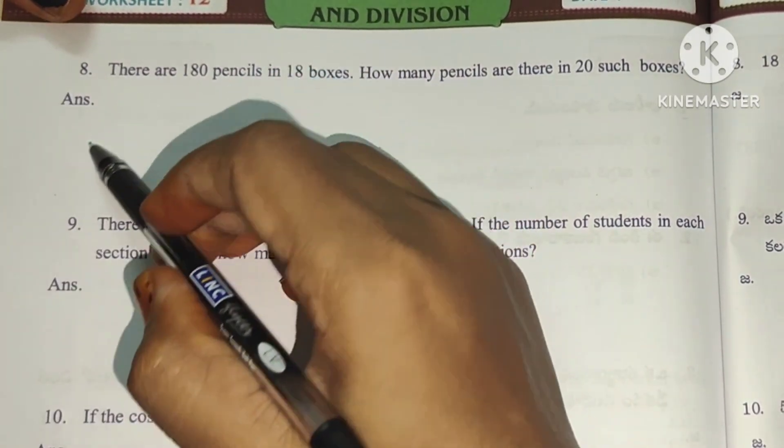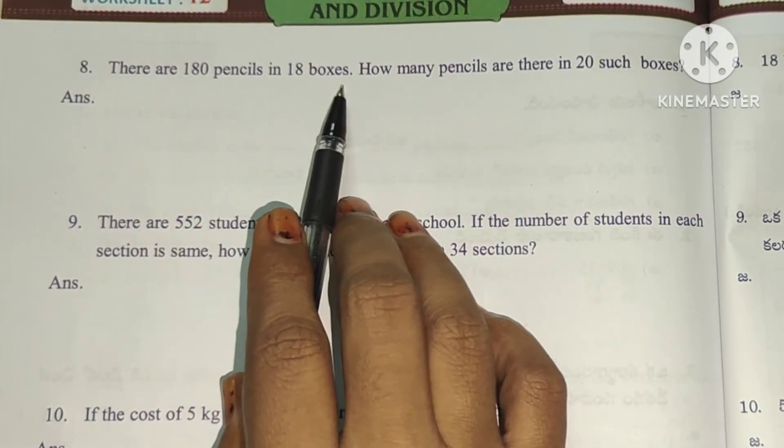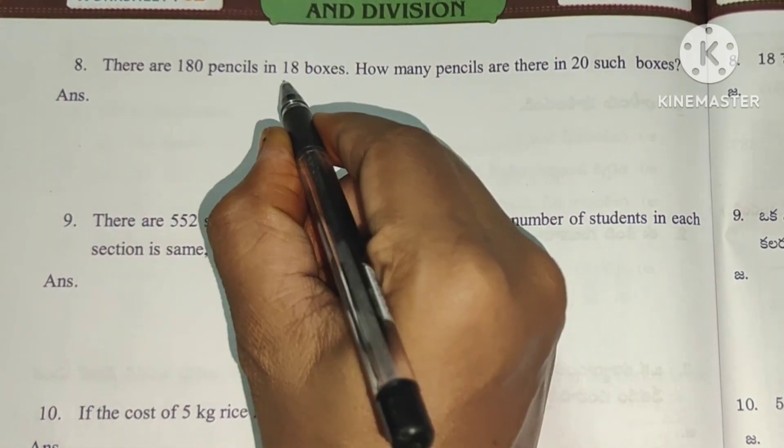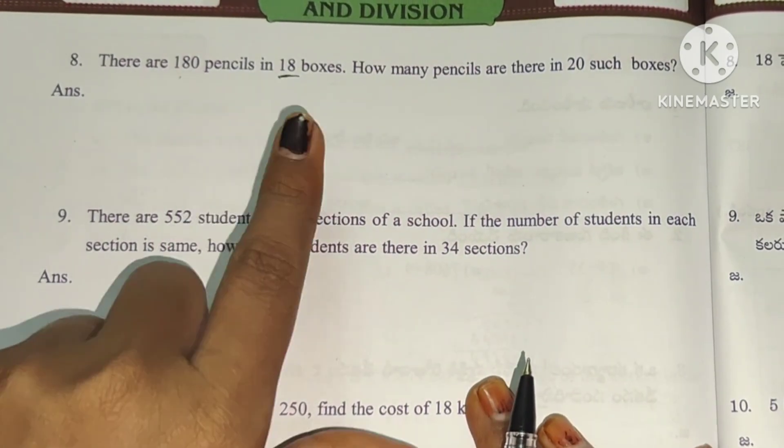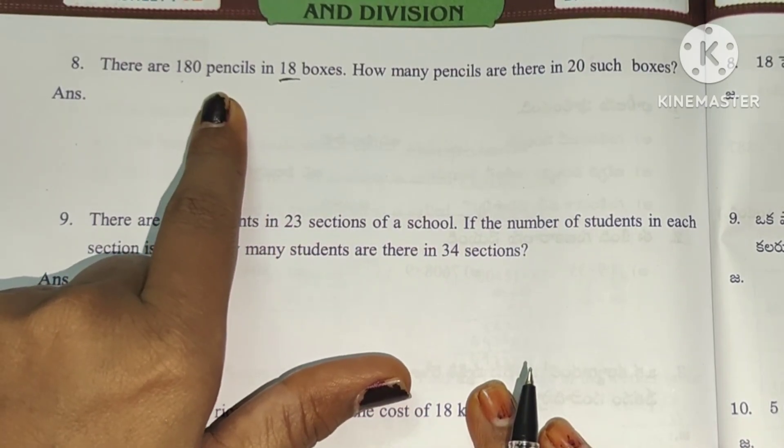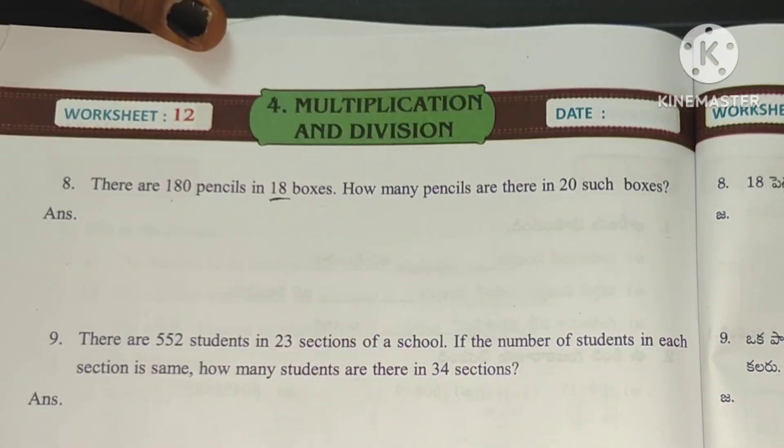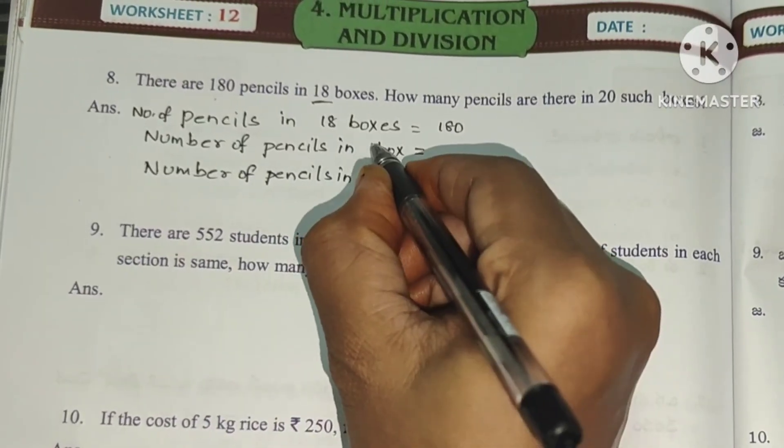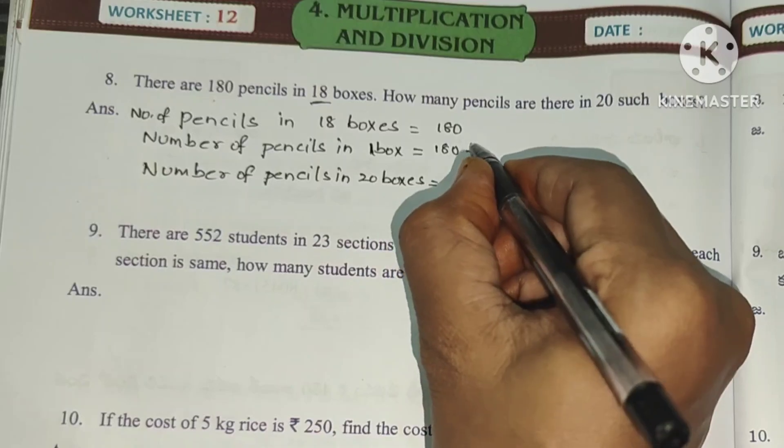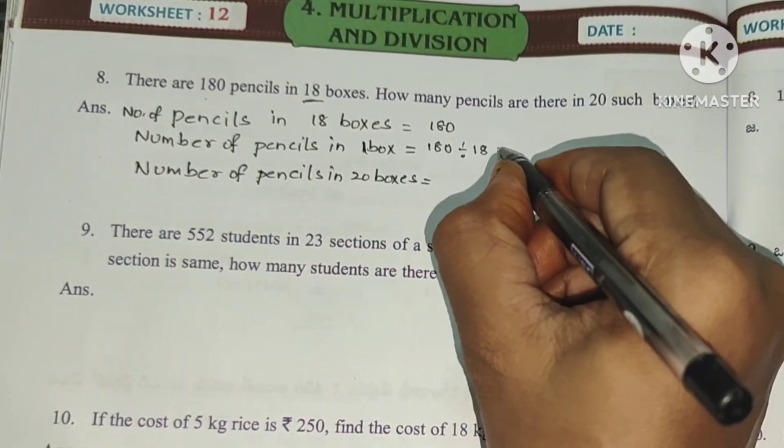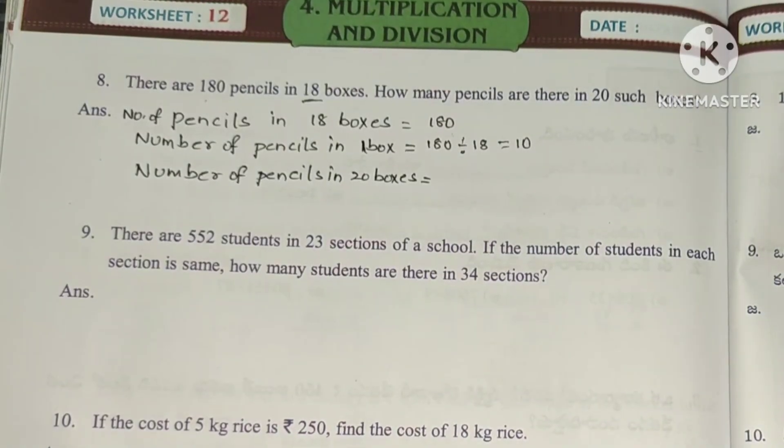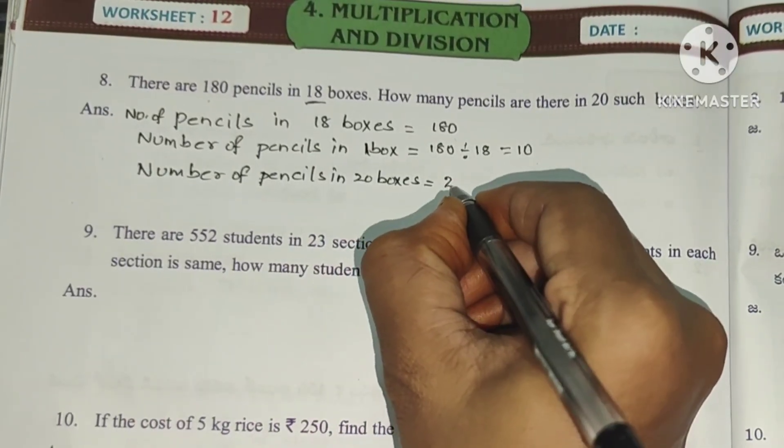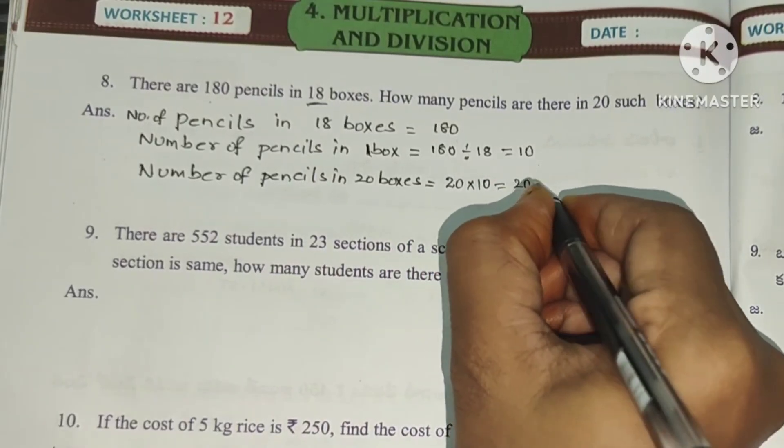Next, seventh problem. There are 180 pencils in 18 boxes. How many pencils are there in 20 such boxes? Number of pencils in 18 boxes is 180. Number of pencils in one box, we divide 180 divided by 18. 18 times 10 is 180. So one box has 10 pencils. Number of pencils in 20 boxes is 20 into 10, which equals 200.